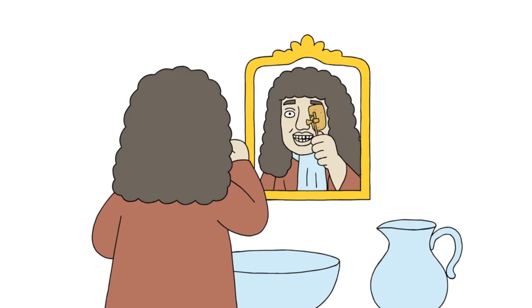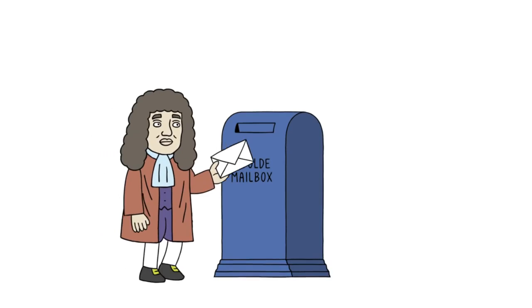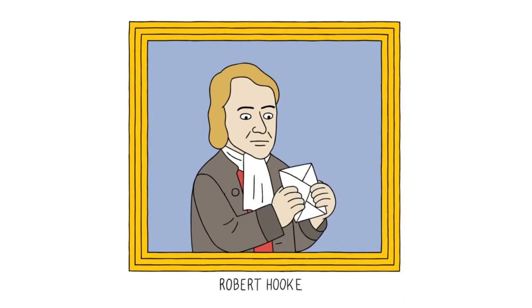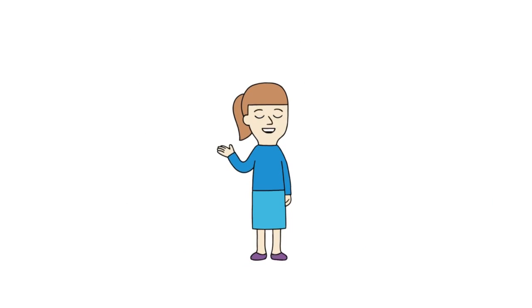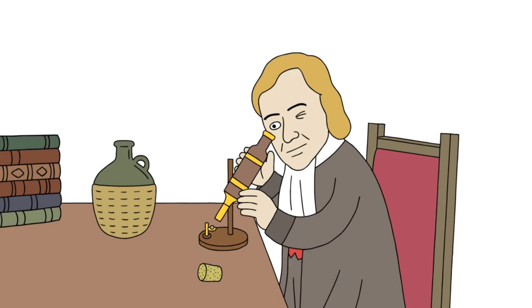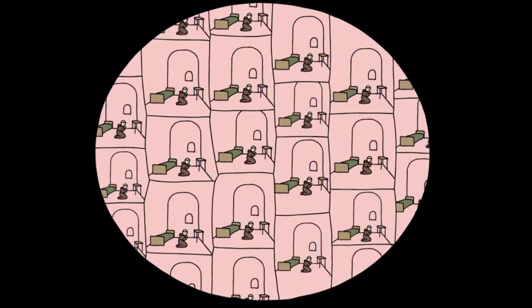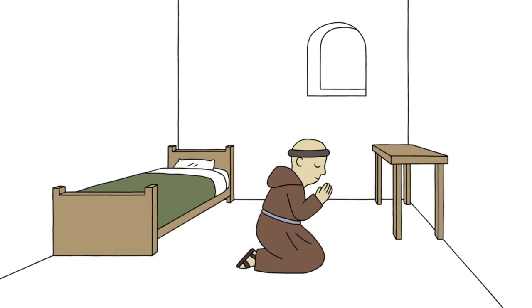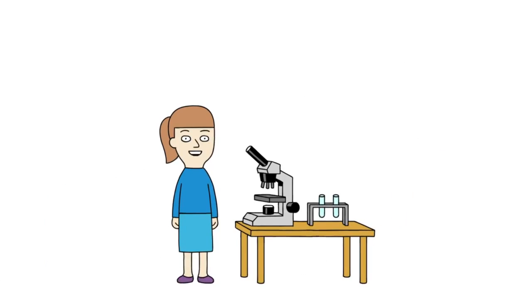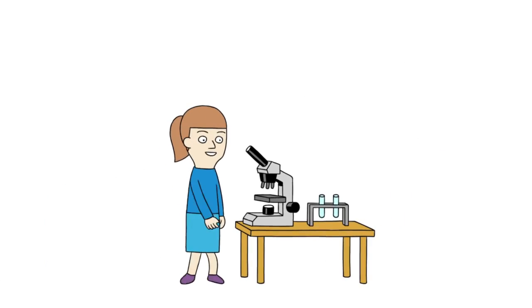While Leeuwenhoek was staring at his teeth gunk, he was also sending letters to a scientific colleague in England by the name of Robert Hooke, who we can thank for the term "the cell," as he was looking at a piece of cork under his microscope and the little chambers he saw reminded him of cells — the rooms monks slept in in their monasteries. So if something bores you, dig deeper.